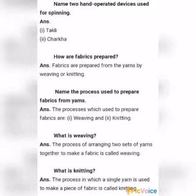Next question: Name the process used to prepare fabrics from yarns. Answer: The processes used to prepare fabrics are weaving and knitting. Next question: What is weaving? Answer: The process of arranging two sets of yarns together to make a fabric is called weaving.